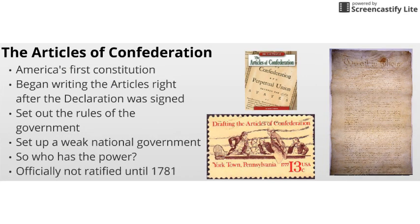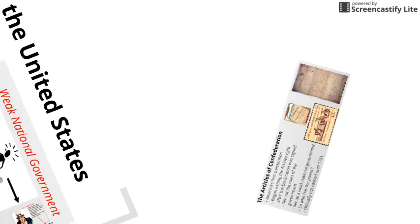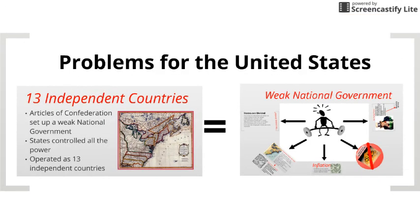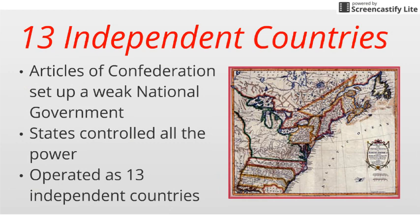Let's look at our first Constitution. Number three is the Articles of Confederation, and this was written pretty much right after the Declaration of Independence. That same group of guys got together and started writing this, and it set up the rules for our first government. It sets up a very weak national government by design — if the national government's not powerful, look at number four of our notes, all the power was instead with the states. You don't want something like Parliament or a strong king-like figure in charge.